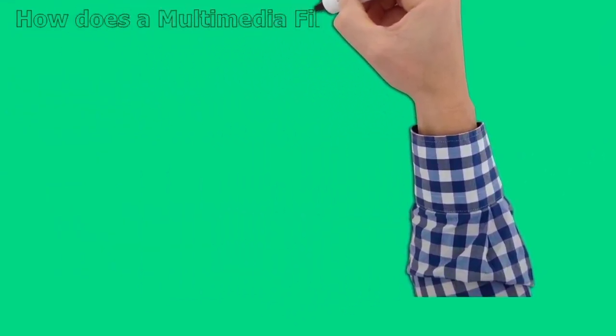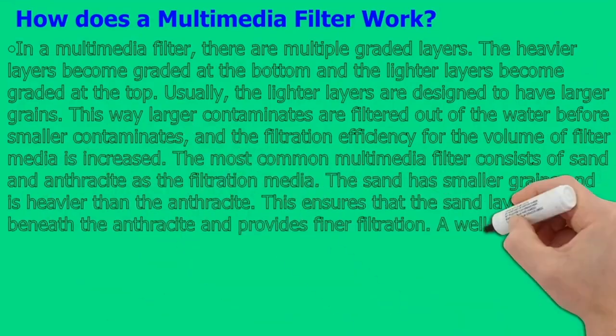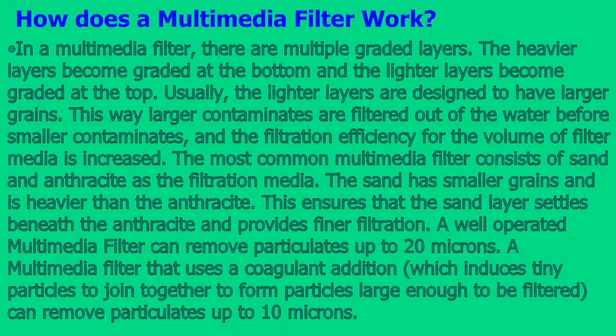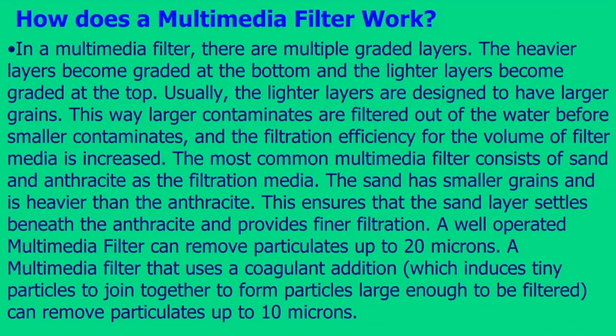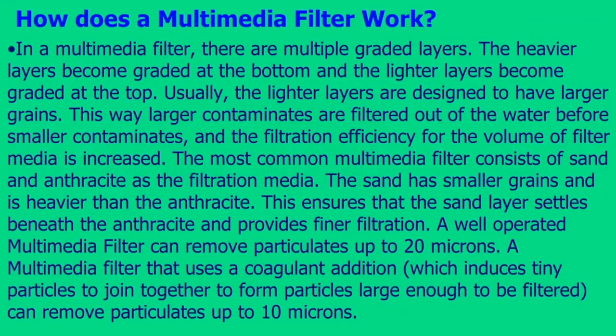How does a multimedia filter work? In a multimedia filter, there are multiple graded layers. The heavier layers become graded at the bottom and the lighter layers become graded at the top. Usually the lighter layers are designed to have larger grains. This way, larger contaminants are filtered out of the water before smaller contaminants, and the filtration efficiency for the volume of filter media is increased.